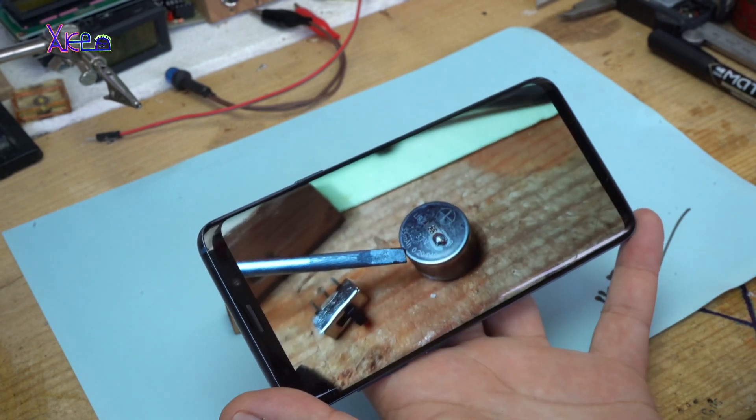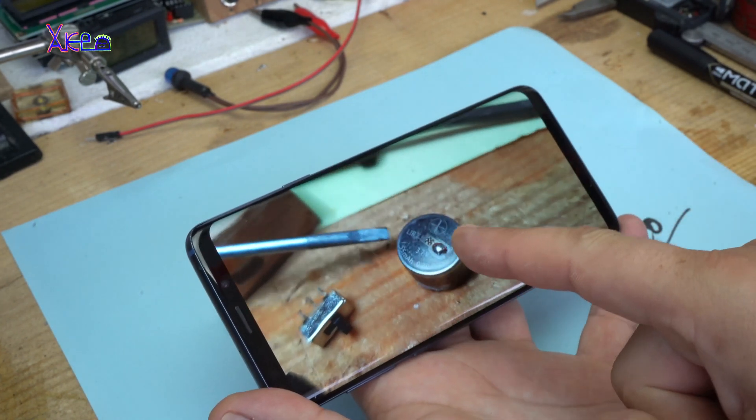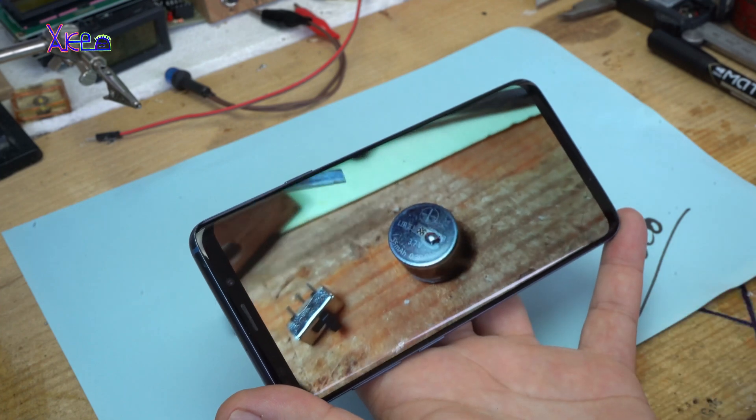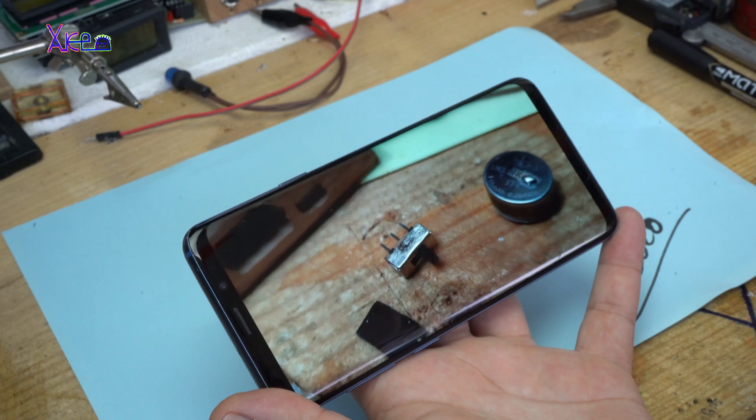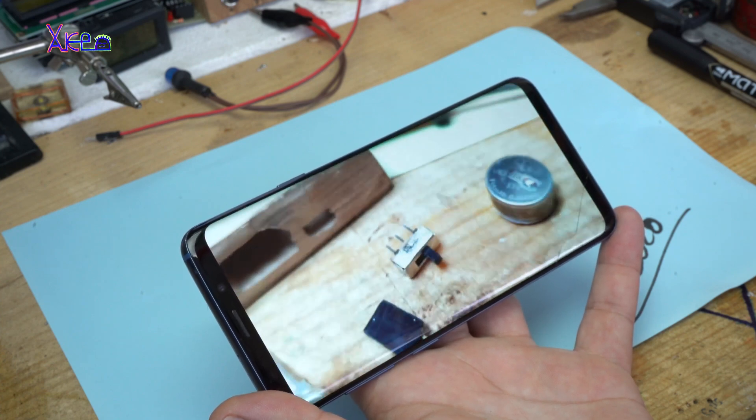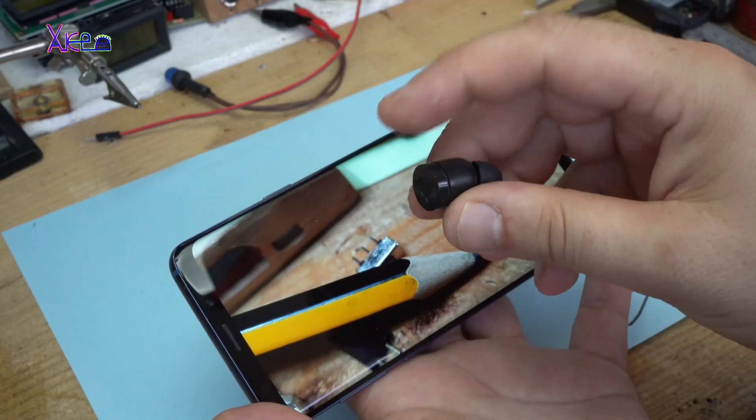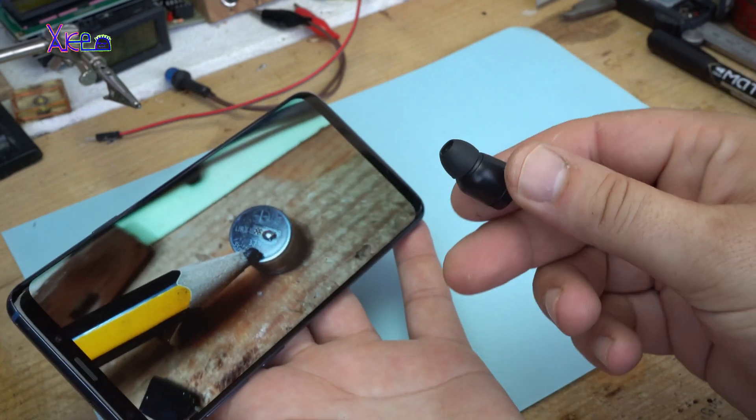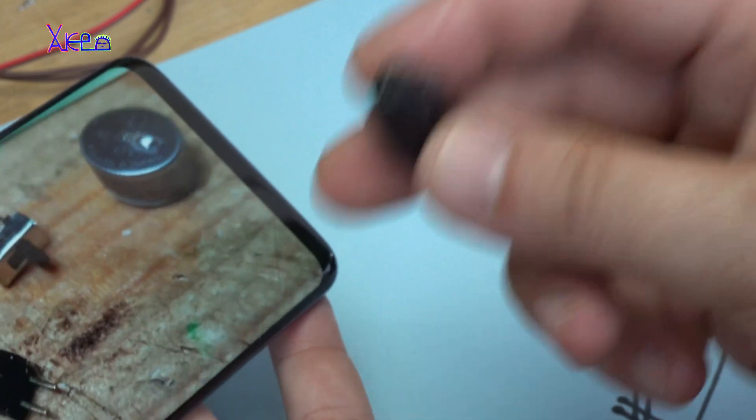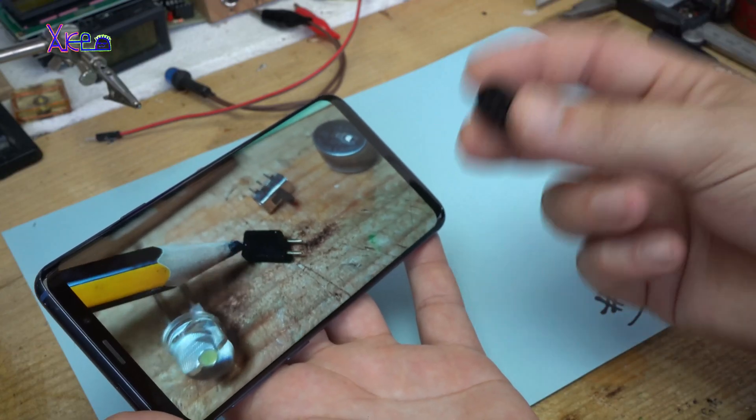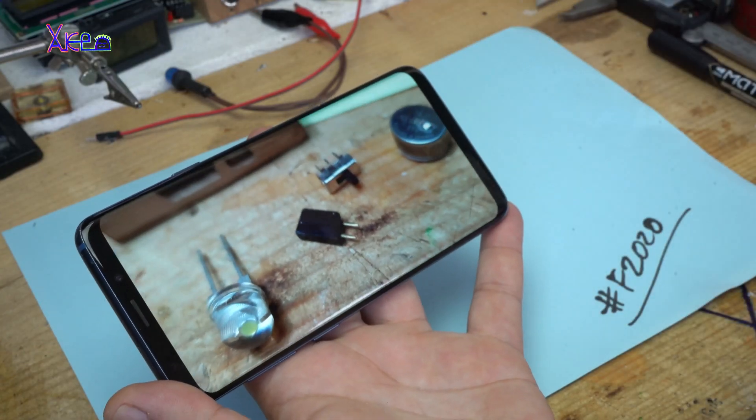I need to mention that this rechargeable battery, lithium rechargeable battery, 3.7 volts, it's so small and it's pulled out from this guy. It's a wireless earbuds. These are broken and that's why I used the battery for another project.